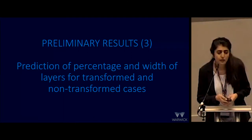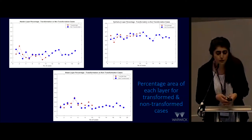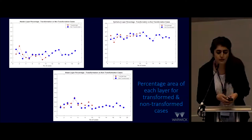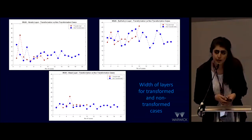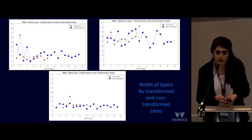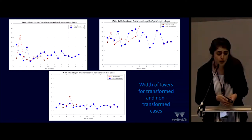Next, we'll look at the percentage area and width of the layers between the transformed and non-transformed cases. From our cohort, there were 10 cases which had transformed — six from the moderate dysplasia grades and the remaining from severe dysplasia. The percentage area of the basal layer was greater in the transformed cases, and the width of the basal layer was also greater in the transformed cases compared to the non-transformed cases. This is consistent with what we would expect to see and demonstrates one of the architectural features noted in transformed or high-grade dysplasia histologically.